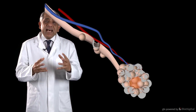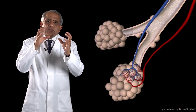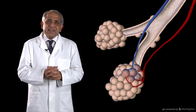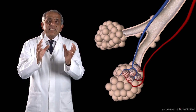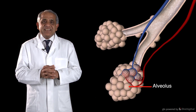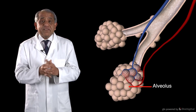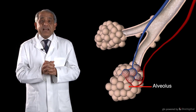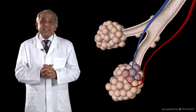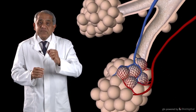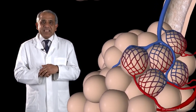It is these alveolar ducts that are surrounded by clusters of thin-walled sacs. Each thin-walled sac is called an alveolus. A cluster of alveoli surrounds each alveolar duct, and it is in the walls of these alveoli that gaseous exchange takes place.